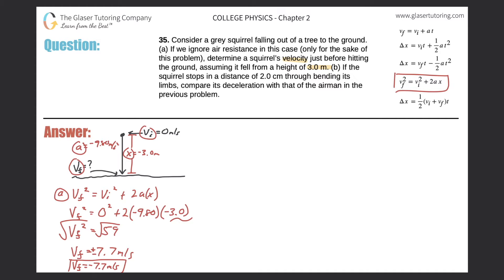Now let's take a read over part B. If the squirrel stops in a distance of 2.0 centimeters through bending its limbs, compare its deceleration with that of the airman in the previous problem. So basically, what's happening now is we're really focusing in on this particular area when the squirrel is just hitting the ground. I'm essentially going to blow this up and zoom in on that particular area. Now the squirrel is hitting the earth here with a velocity, as we just calculated, of negative 7.7 meters per second.